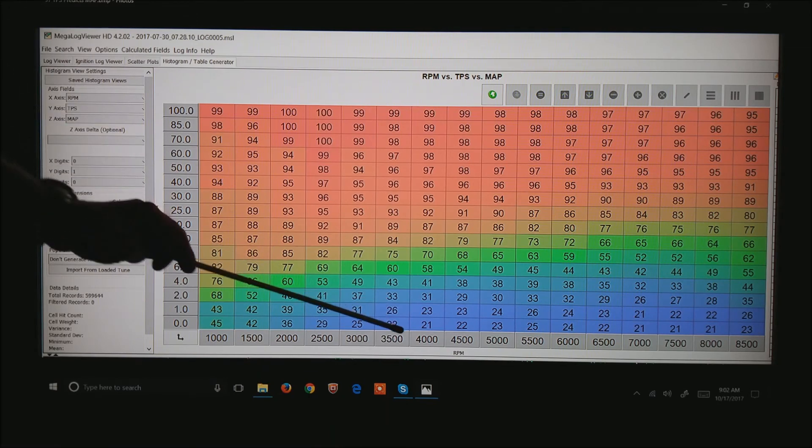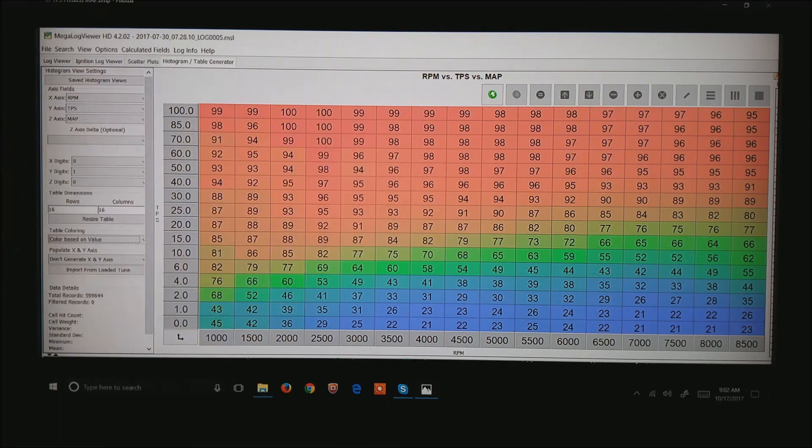But notice you do have a fairly smooth gradient from purple up to red. What this proves is that TPS, throttle position, and RPM is pretty good at predicting the manifold air pressure.